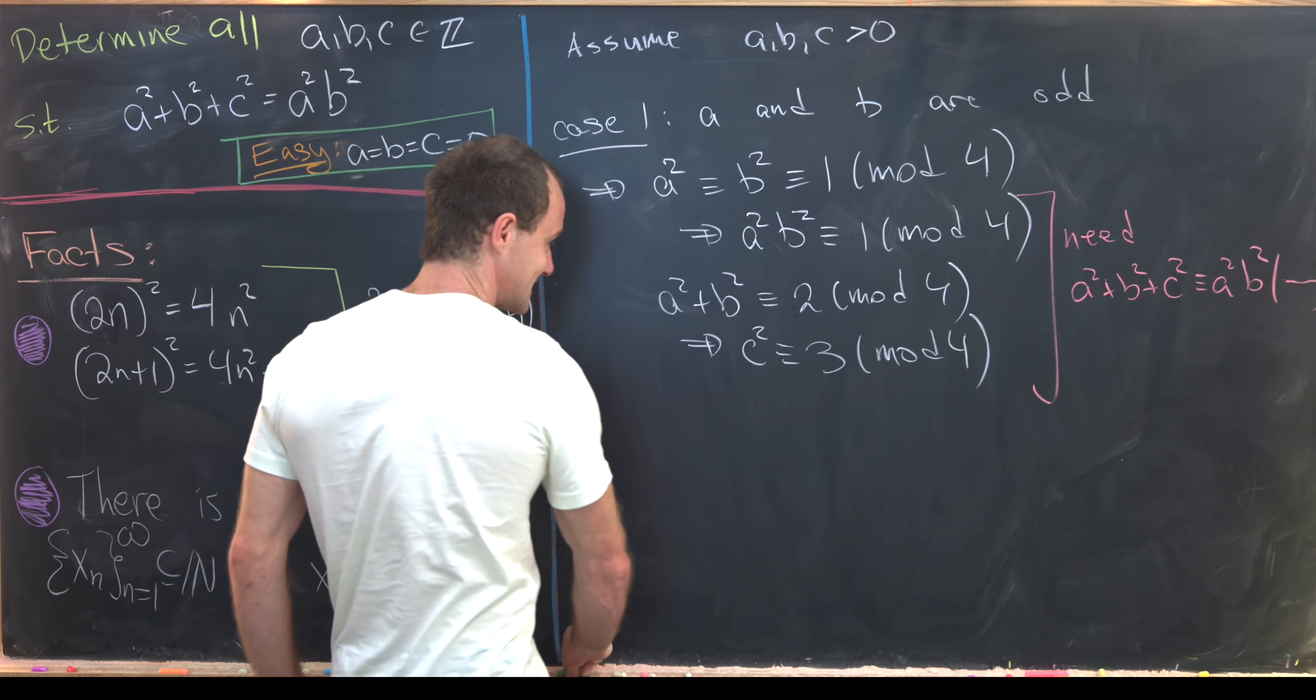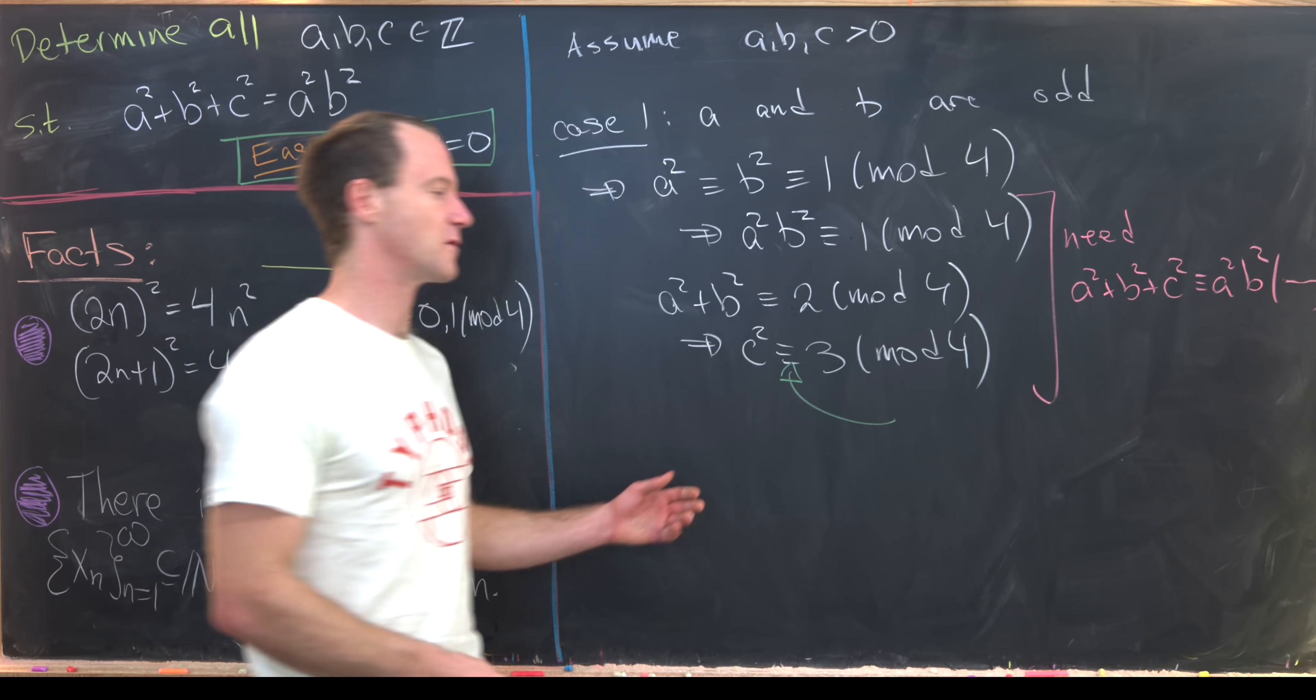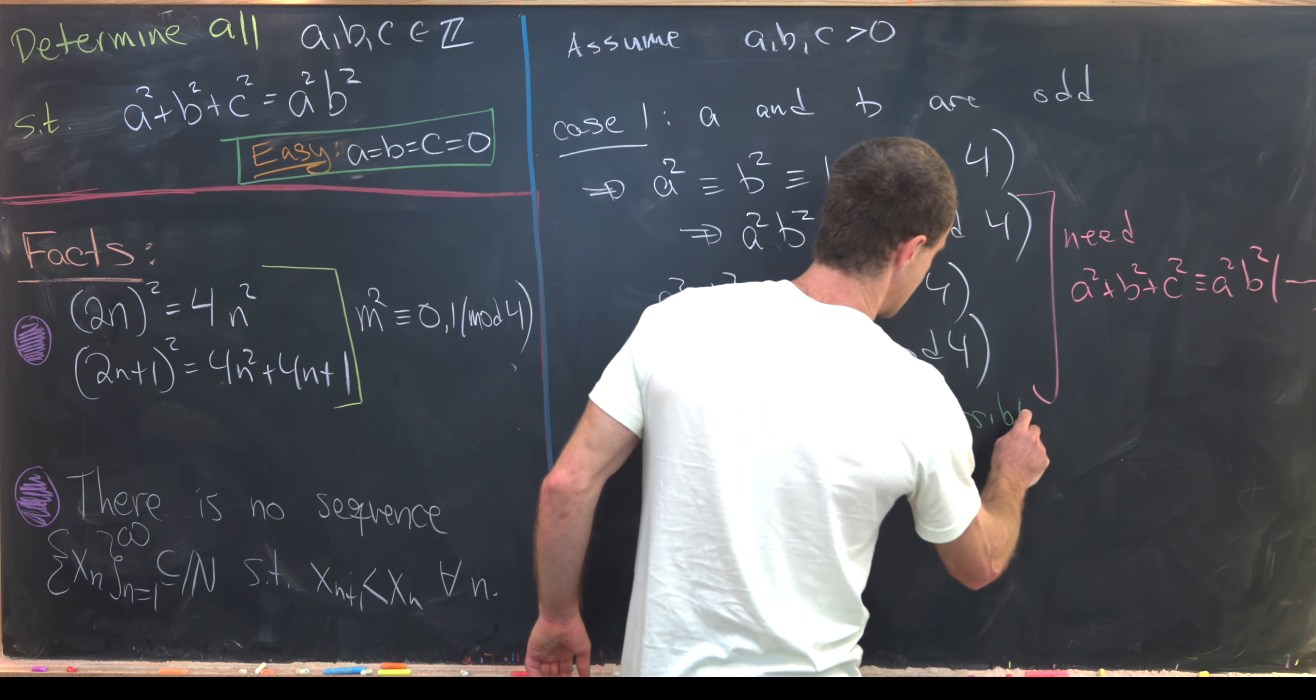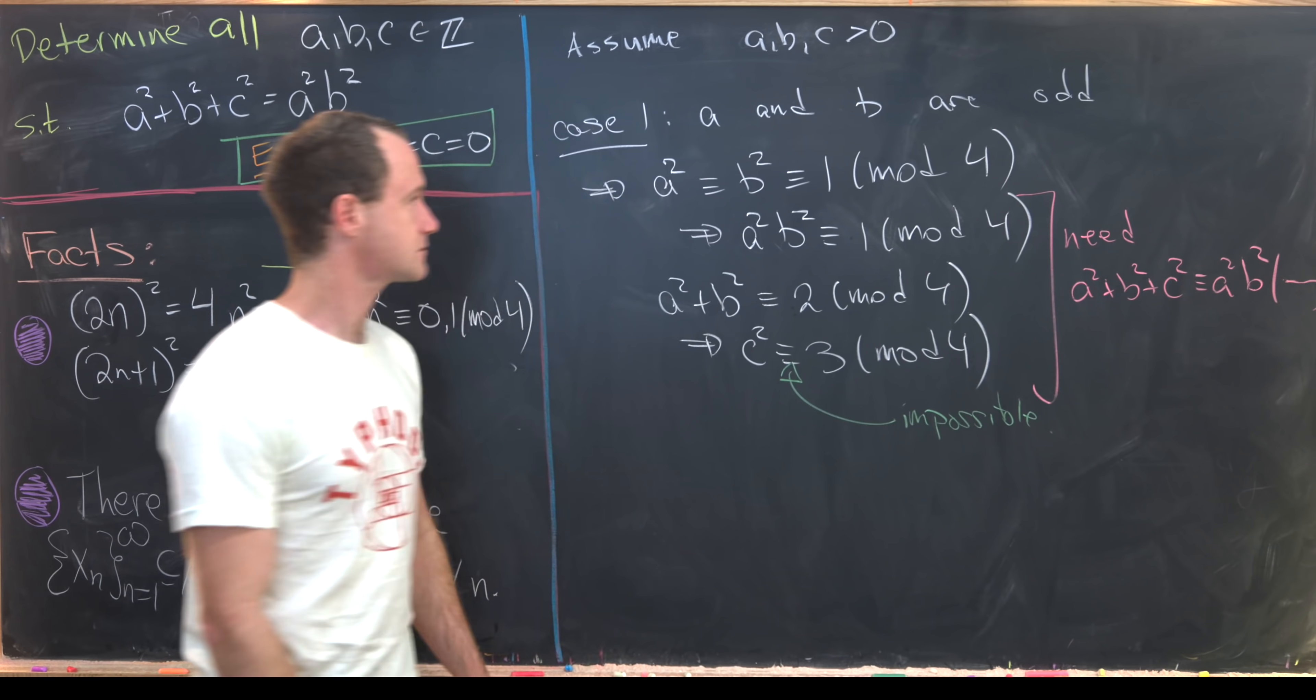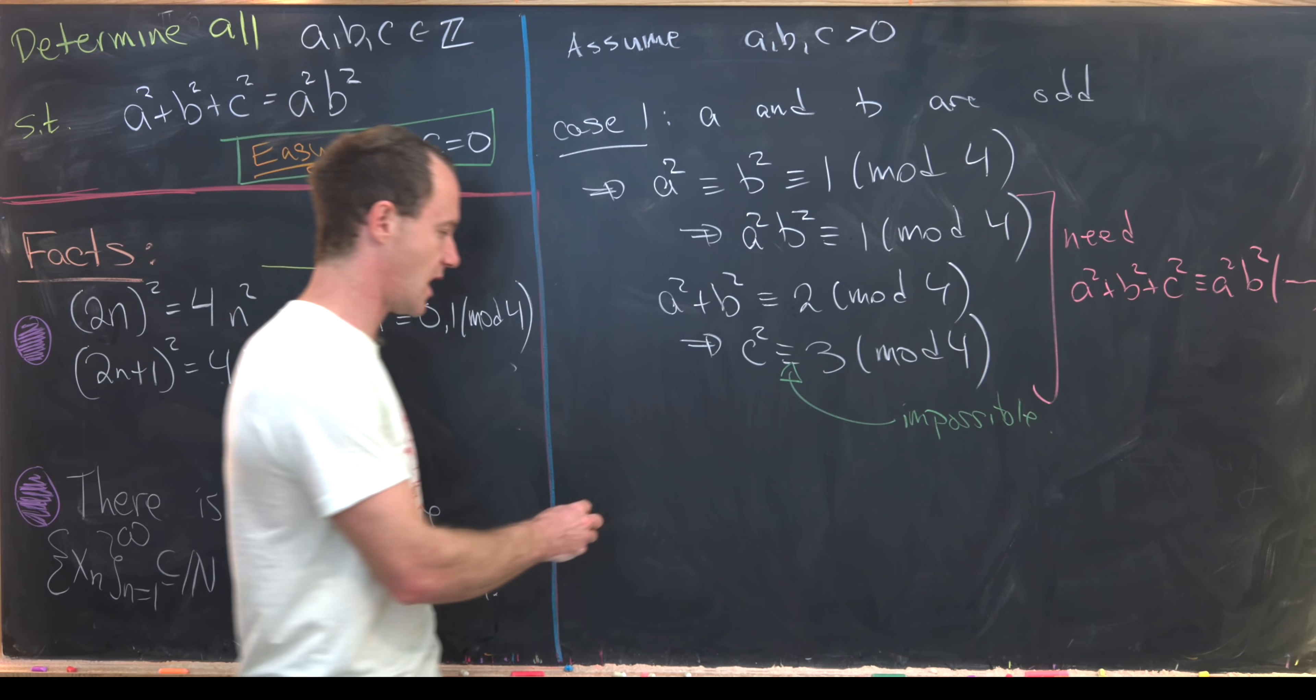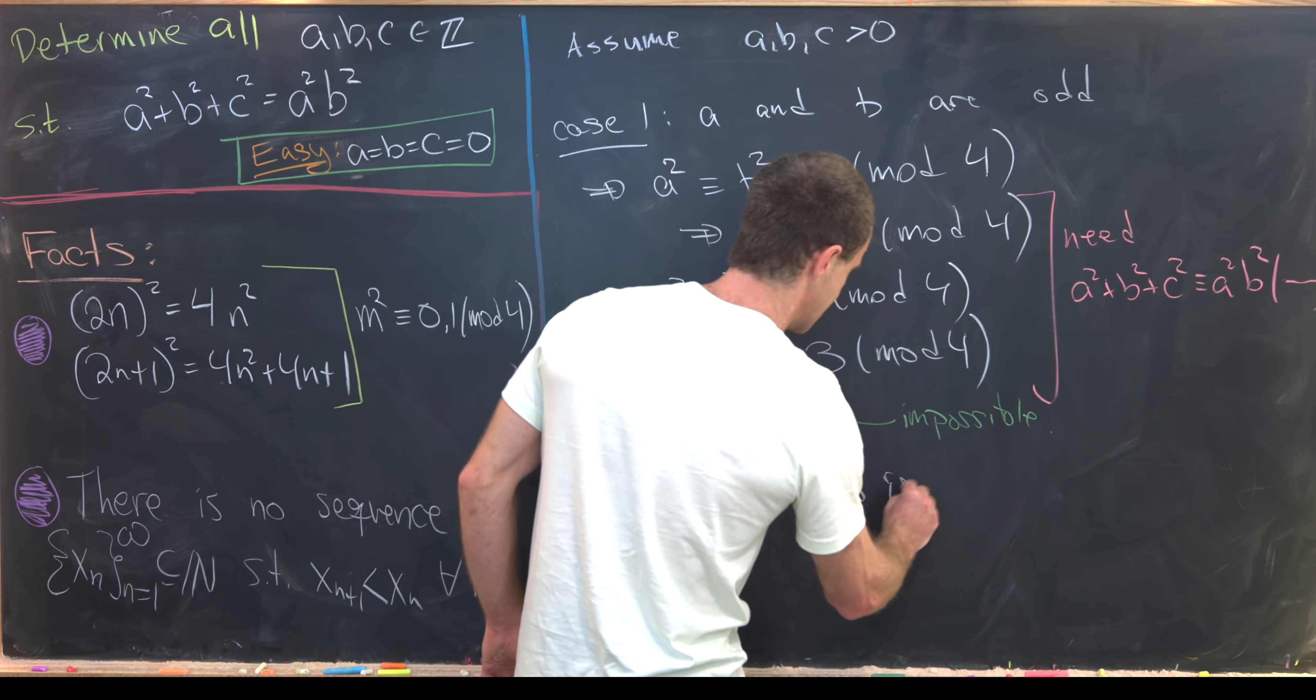But notice that tells us that c² ≡ 3 (mod 4), but that's impossible by this little fact that we noted over here. So it's impossible for a and b to both be odd. So that tells us that a or b is even.